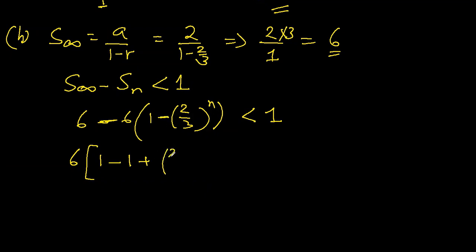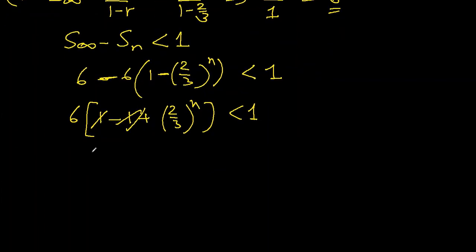(2/3)^n less than 1. 1 and 1 cancel out, so we are left with 6(2/3)^n less than 1.